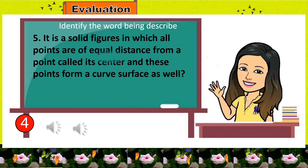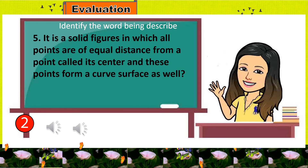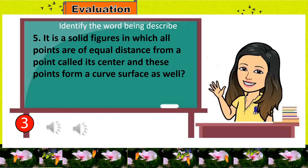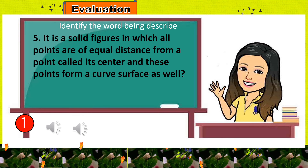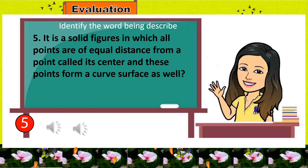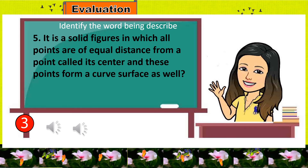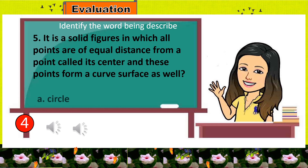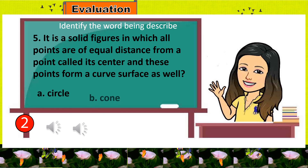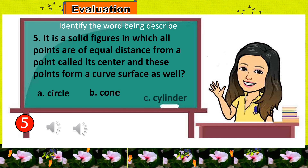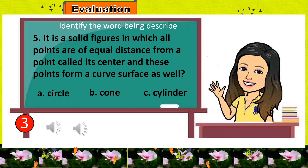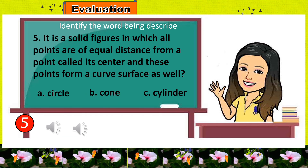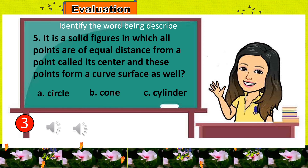Number 5: It is a solid figure in which all points are of equal distance from a point called its center, and these points form a curved surface as well. A. Circle, B. Cone, C. Sphere. Excellent! All your answers are correct!